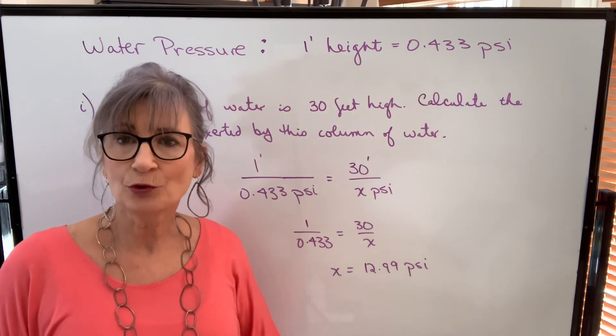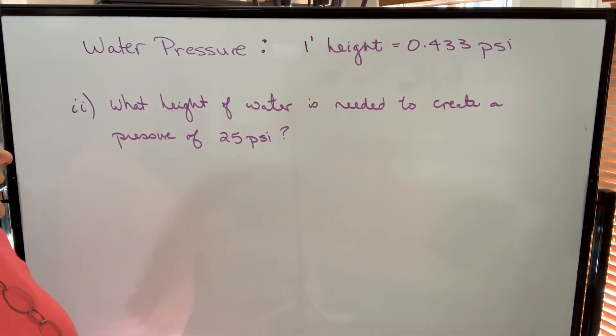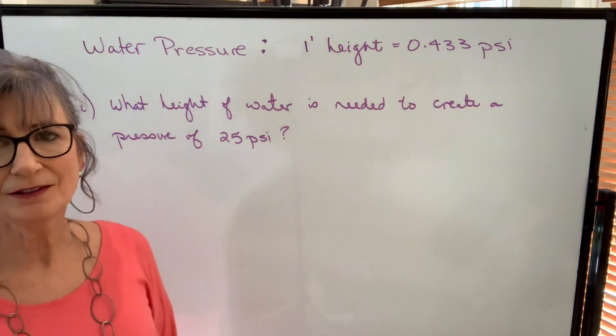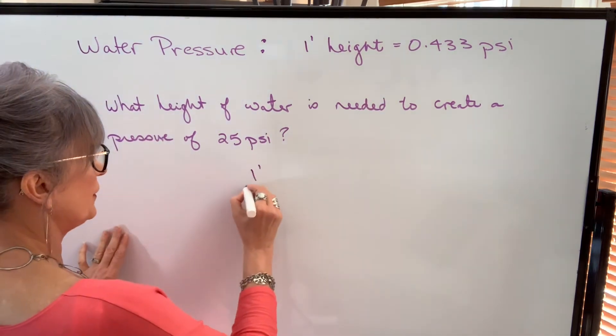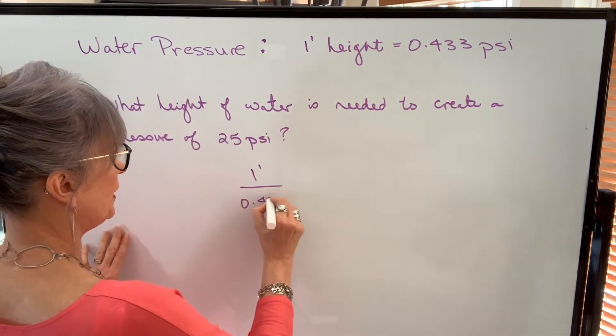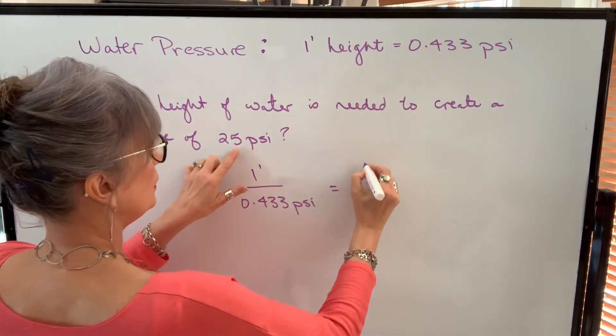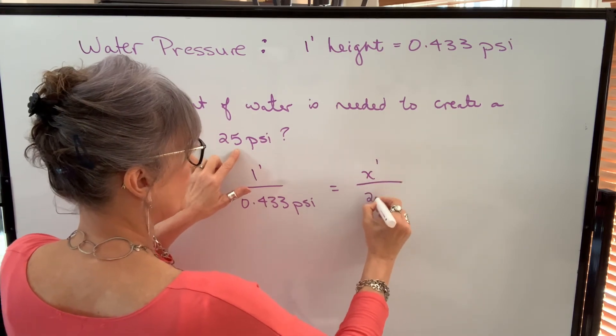Let's do an example where we know the pressure and we want to find the height. The next example says what height of water is needed to create a pressure of 25 psi. So again, we're going to use direct proportion. 1 foot over 0.433 psi will equal—we don't know the height so that will be our x—to get 25 psi.